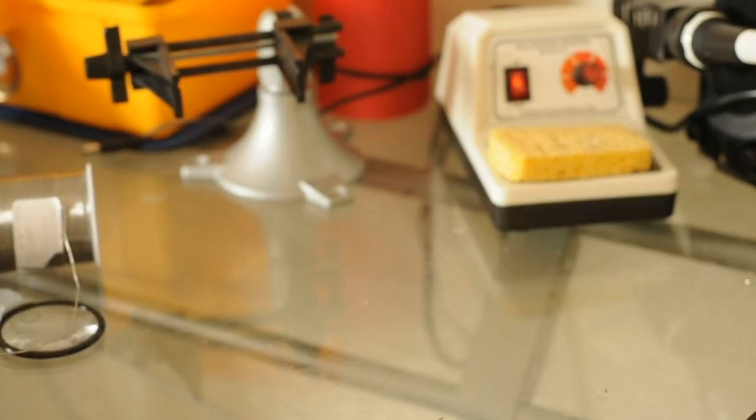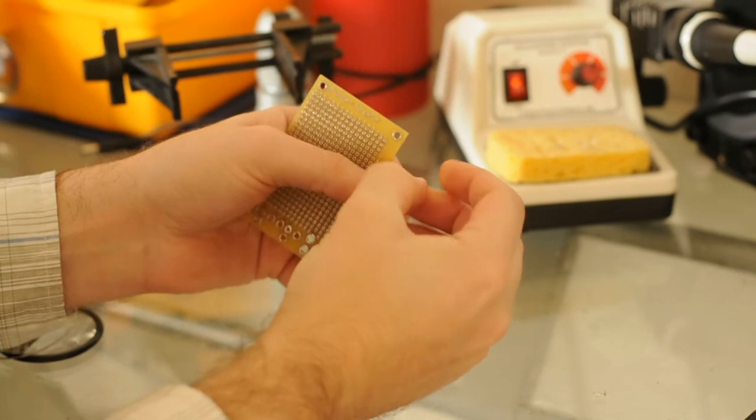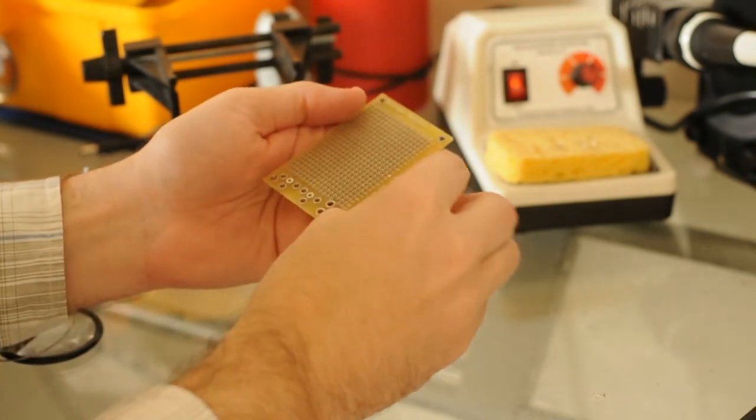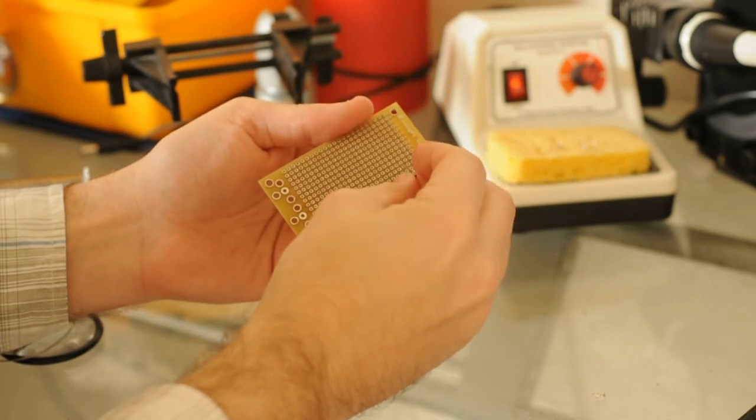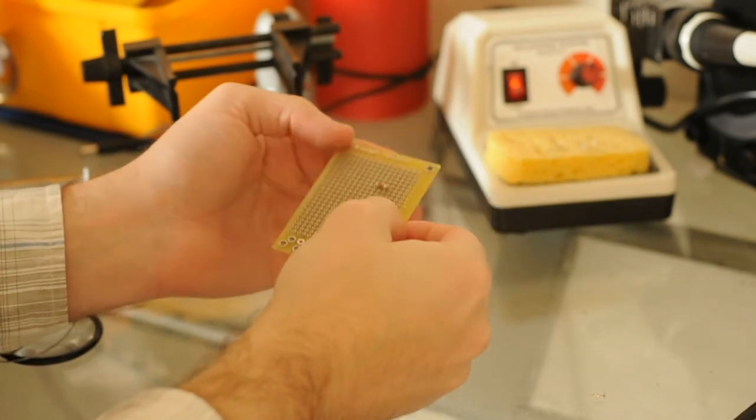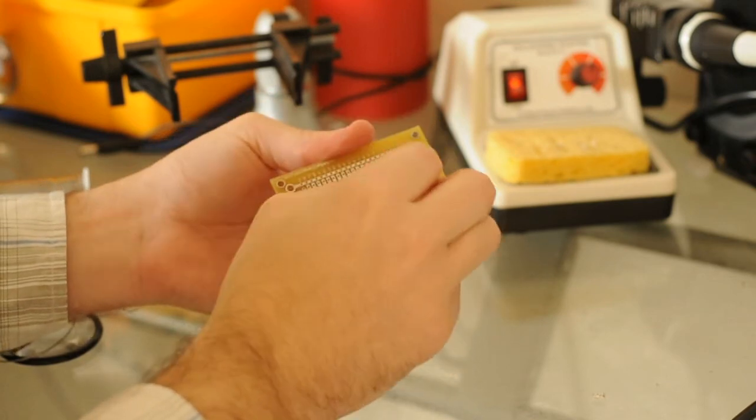Your iron's heated up. It's tinned. Let's take the part. Fold the leads at a 90 degree angle like that. Insert it into the board. Flip the board over and splay the leads apart.